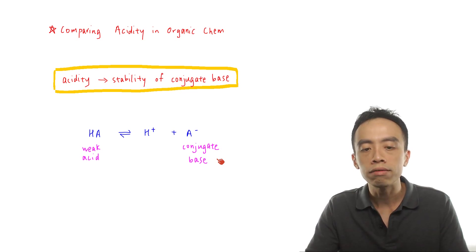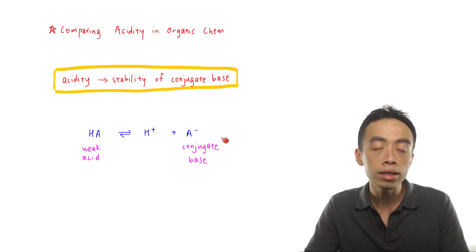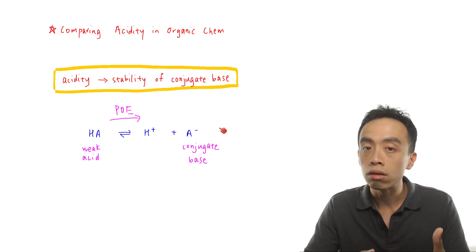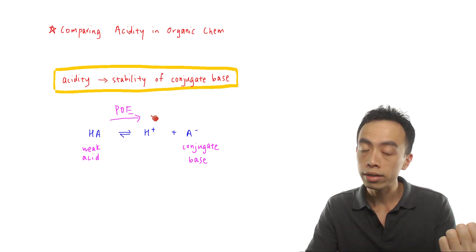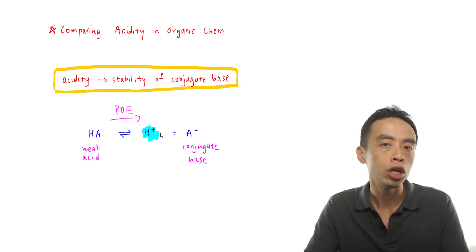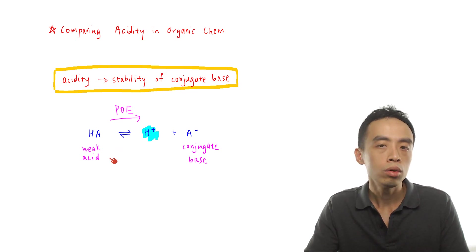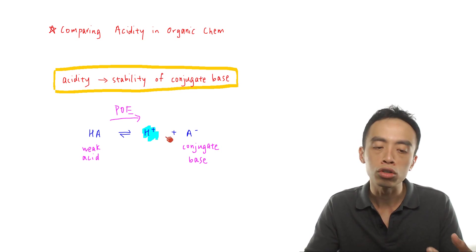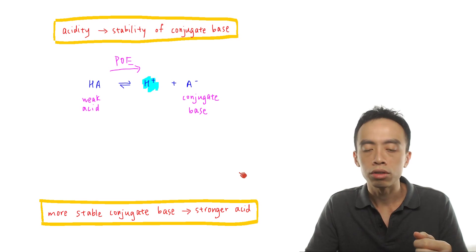What we focus on is the stability of the conjugate base. If A-, the conjugate base, is more stable, then the system will favor the formation of A-. The position of the equilibrium will lie towards the right-hand side, favoring the formation of conjugate base. This also means more H+ is formed. So the concept is simple: the more stable the conjugate base, the stronger the weak acid.